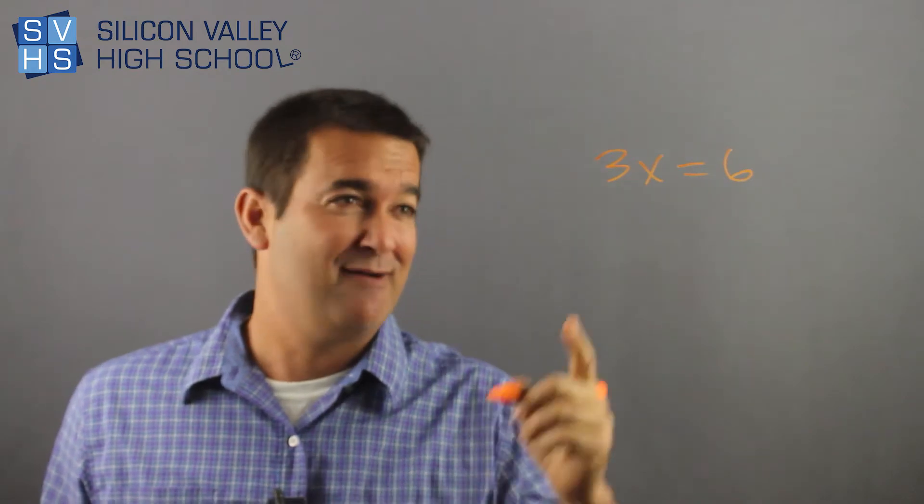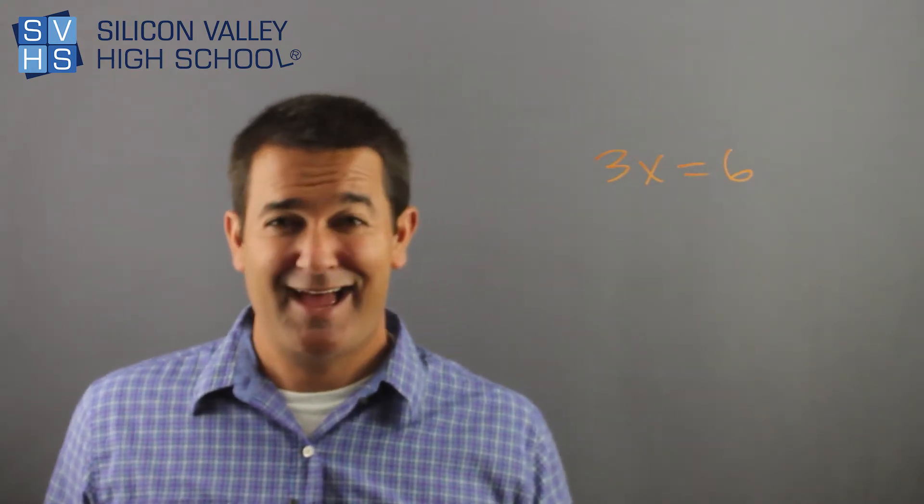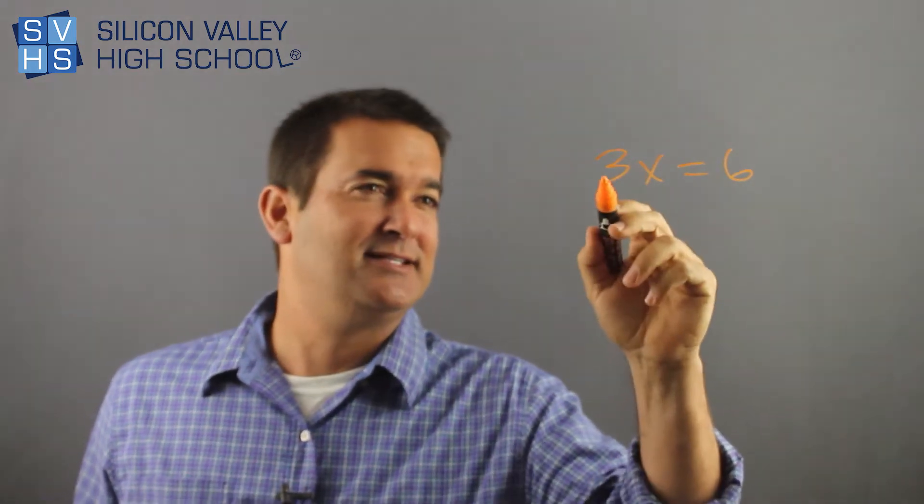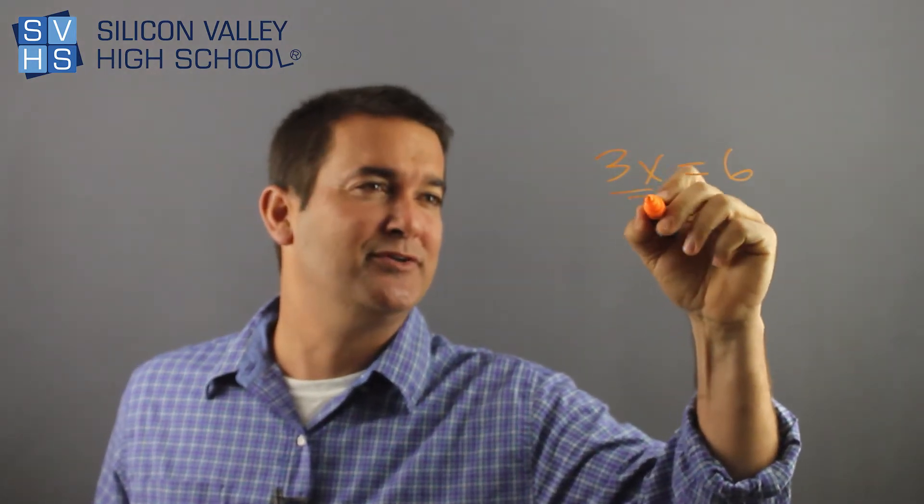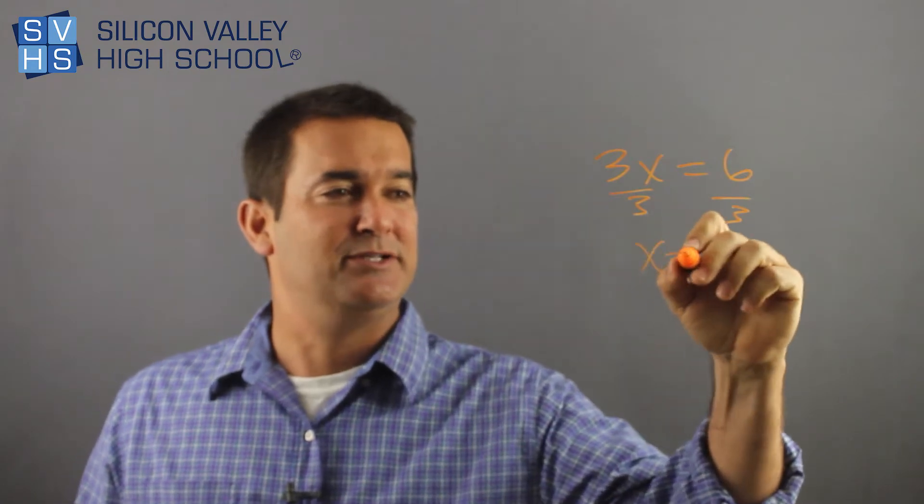This is a one-step equation, right? Obviously the only thing you have to do here is, hey, I need to get x alone. This is 3 times x. What's the opposite of times? Divide. So you do divided by 3. Divided by 3. X would be 2.